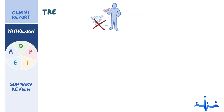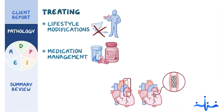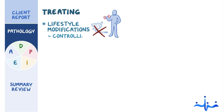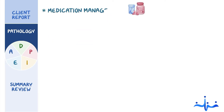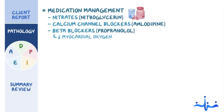Treating CAD centers around lifestyle modifications, medication management, and, if needed, coronary revascularization procedures. Lifestyle modifications involve controlling modifiable risk factors. Nitrates, like nitroglycerin, and calcium channel blockers, such as amlodipine, work by dilating coronary arteries. Beta blockers, like propranolol, reduce myocardial oxygen demand by decreasing heart rate and contractility.